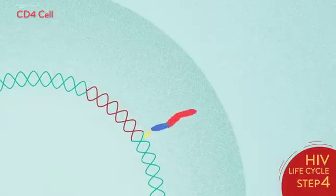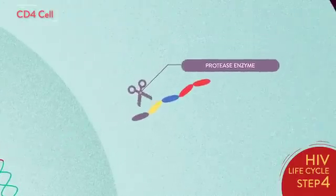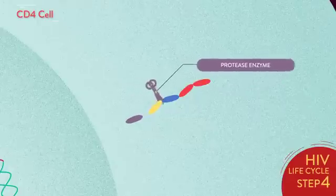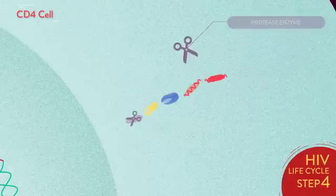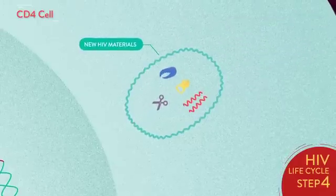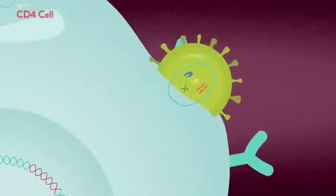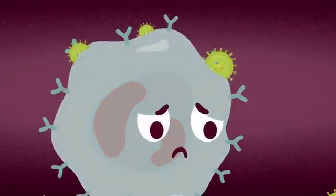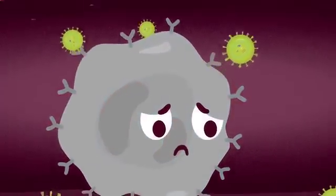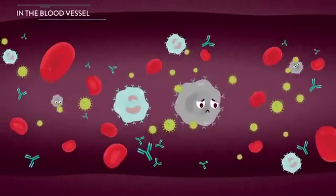Then, the protease enzyme processes the produced HIV material for assembly into an immature virus. Finally, mature HIV materials are released into the body, where the cycle starts over again.